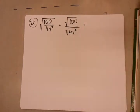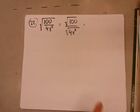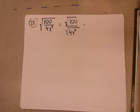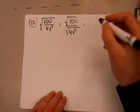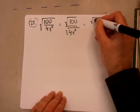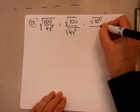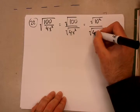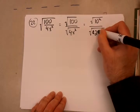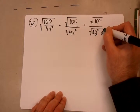Once I do this, I see that I have a lot of perfect squares here. 100 is a perfect square, 4 is a perfect square, and x squared is technically a perfect square too. So I can write it all like this. 10 squared in the numerator and denominator is going to be 2 squared and x squared.